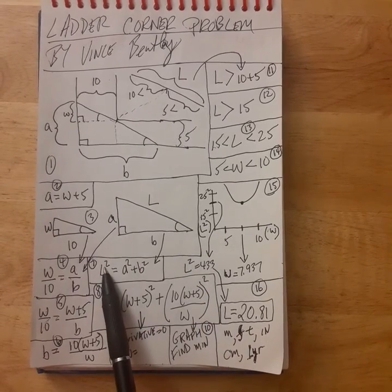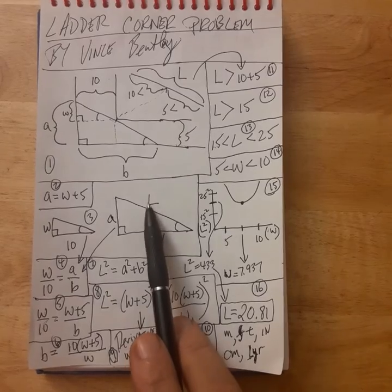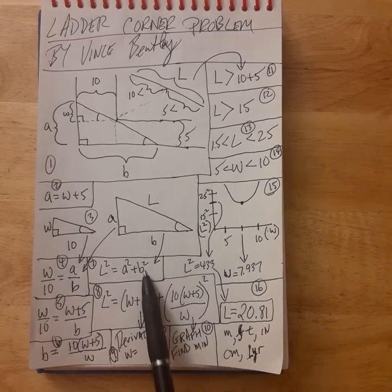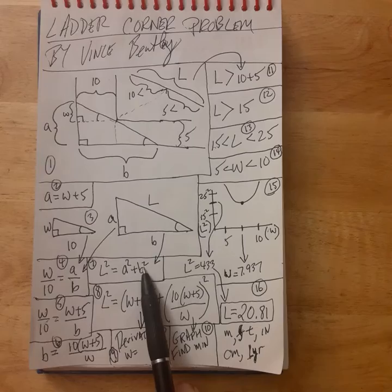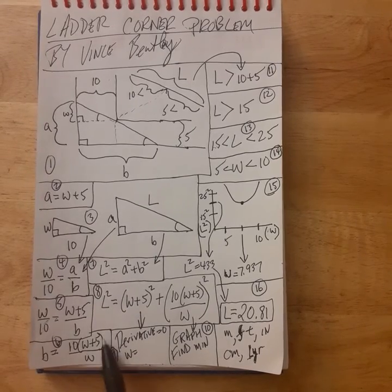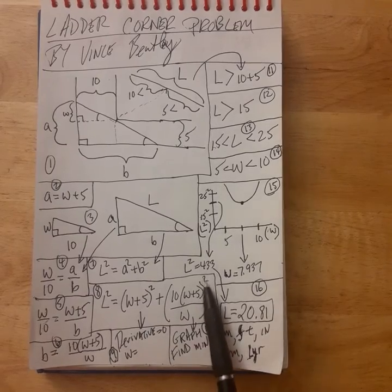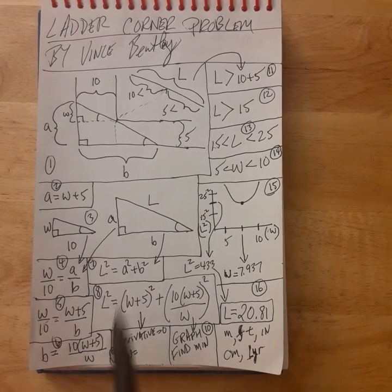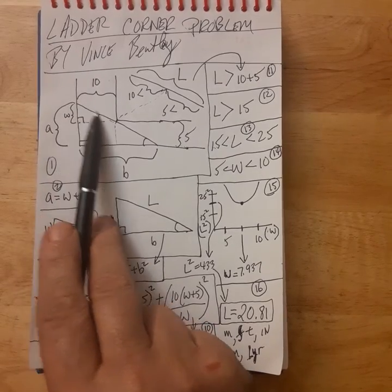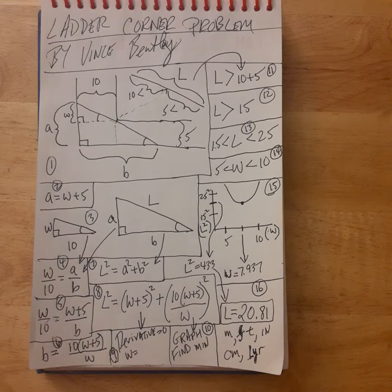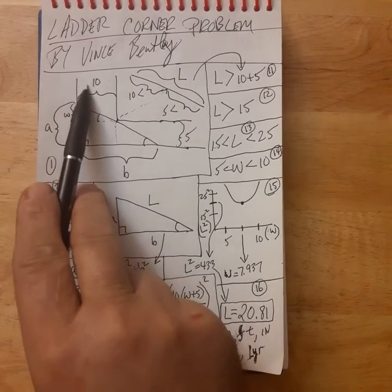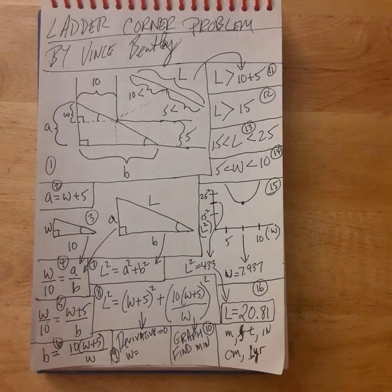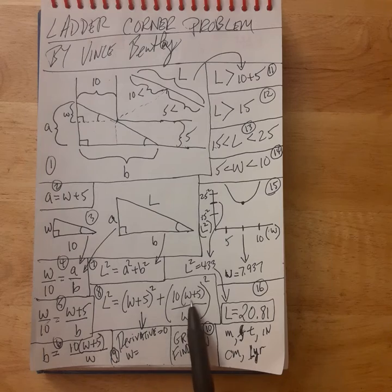Using the Pythagorean theorem on the big triangle, L squared equals a squared plus b squared. We know a is (w + 5) and b is 10(w + 5)/w, so we substitute both into the equation and get the full expression for L squared. We want to find the maximum ladder length, so we need to find the minimum of this expression for L squared.